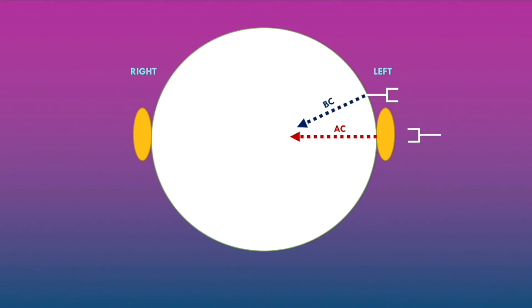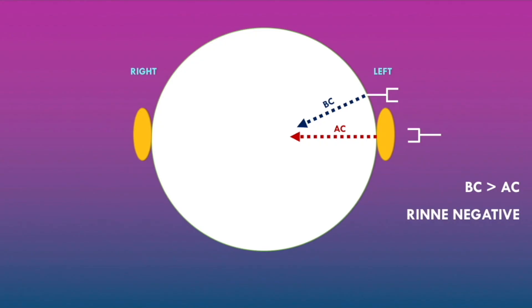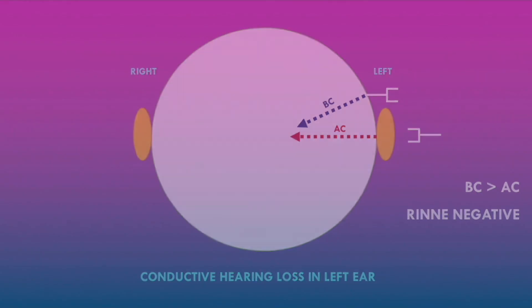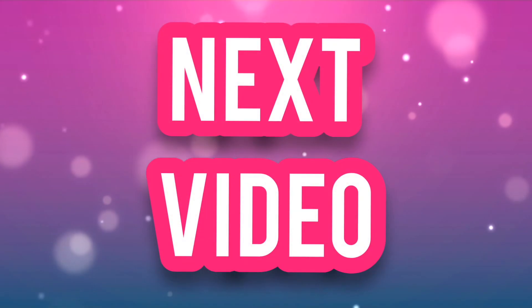If the patient hears the sound loudest when the vibrating tuning fork is placed over the mastoid bone compared to over the left ear, this indicates bone conduction is greater than air conduction — a Rinne negative test. This indicates conductive hearing loss in the left ear. In the next video, we will apply the knowledge learned from this video to different cases with different Weber and Rinne test findings.